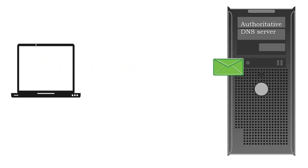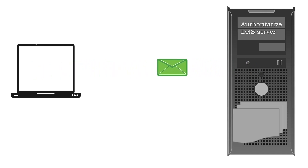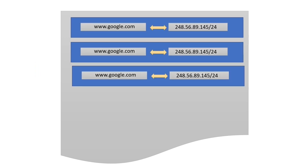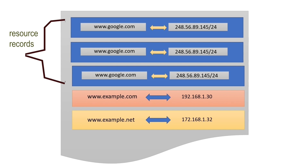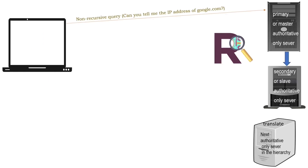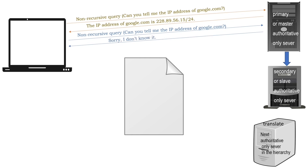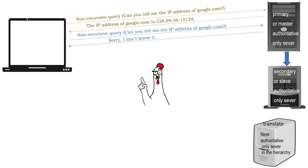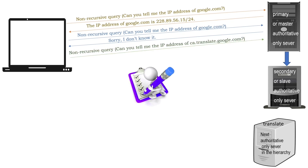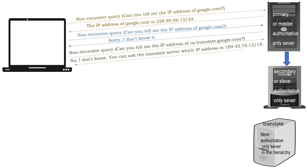In the DNS system, only authoritative DNS servers resolve queries using zone files. Zone files are simple text files that store resource records and referral lists. Resource records map IP addresses with names, and referral lists define the IP addresses of the next DNS servers in the hierarchy. When it receives a DNS query, it checks resource records in zone files. If it finds the requested information, it provides it to the requester. If not, it checks referral lists. If the referral list contains the IP addresses of one or more DNS servers, it provides that list to the requester.